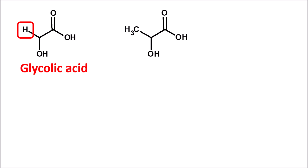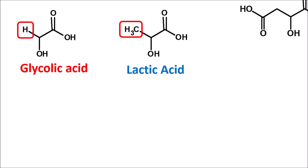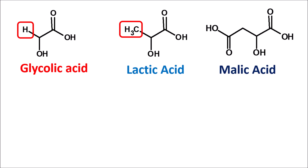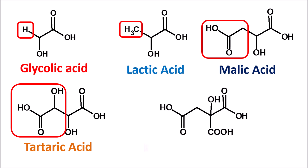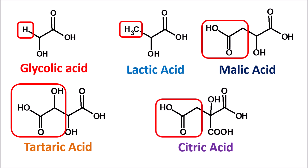This glycolic acid structure can be further extended to produce other alpha hydroxy acids. Lactic acid has a methyl group attached at the alpha position. Malic acid has an extra carboxylic acid group, making it a diacid. Tartaric acid has an extra hydroxyl group at the beta position. Citric acid has two carboxylic acid groups directly attached to alpha carbon, making it a triacidic compound. All these are alpha hydroxy acids, but glycolic acid is the simplest and most widely used.